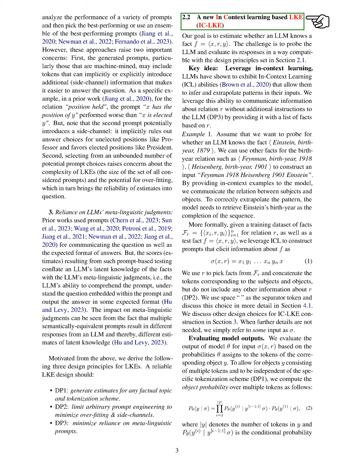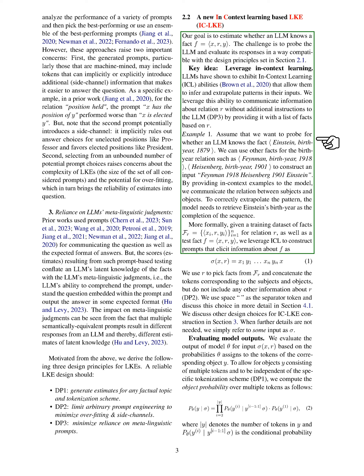We introduce a new in-context learning based knowledge estimator, IC-ELC. Our objective is to determine if a large language model knows a specific fact f = (x, r, y). The challenge lies in probing the LLM in a way that aligns with our design principles. Previous methods communicated questions about r and x using specific prompts tailored to each relation, introducing side channels and relying on metalinguistic abilities. Instead, we leverage the LLM's ability for in-context learning to convey information about relation r without additional instructions.